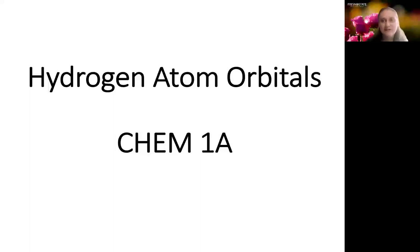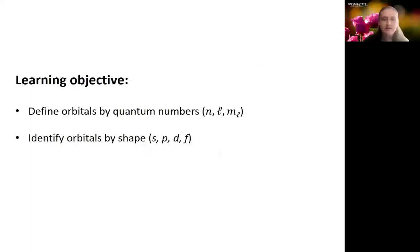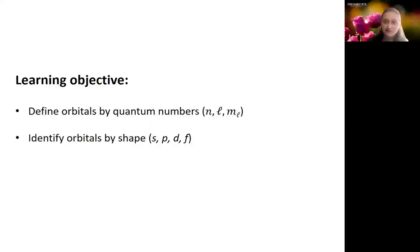In this video we're going to take a look at specific solutions to the Schrödinger equation which are the hydrogen atom orbitals. Watching this video is one step towards helping you meet the learning objectives of being able to define orbitals using the quantum numbers and being able to identify the orbitals based on their shape.